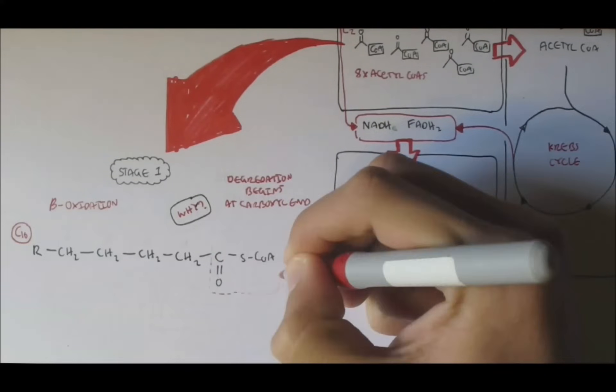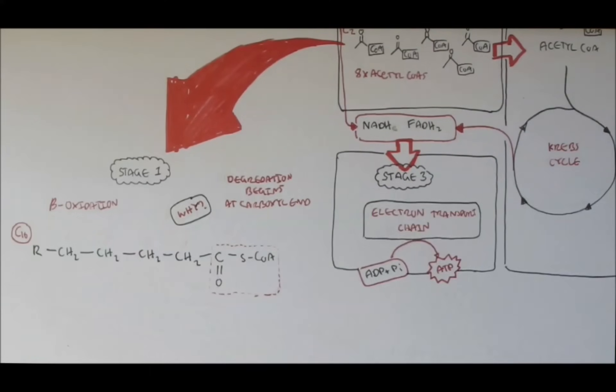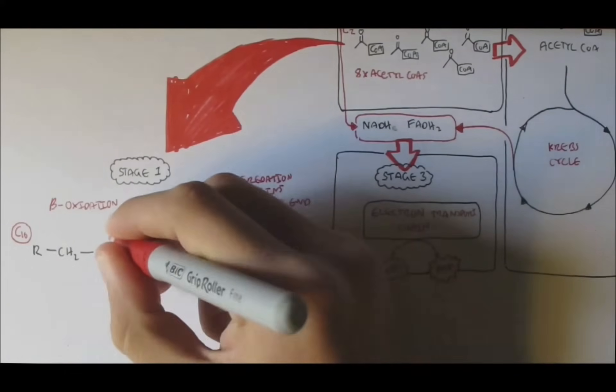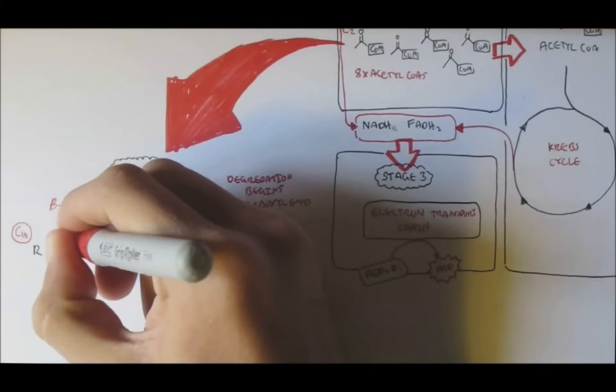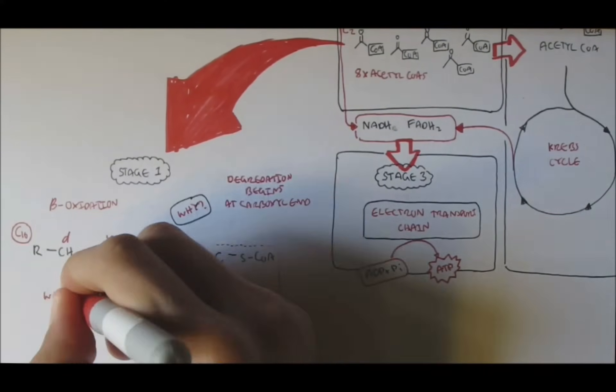Now, the nomenclature of fatty acids, using Greek alphabets, begin with the first carbon, which does not include the carboxyl carbon. So here, for example, is alpha, beta, gamma, and delta.